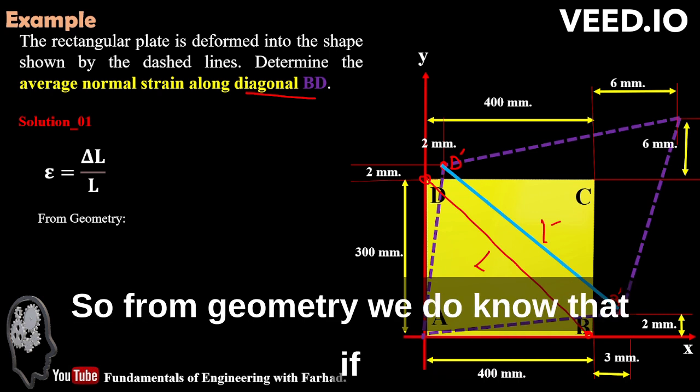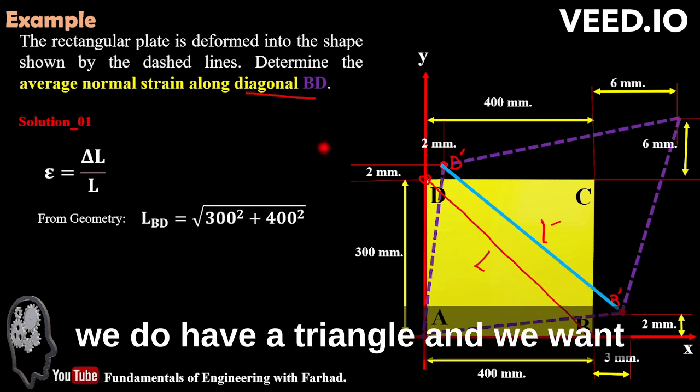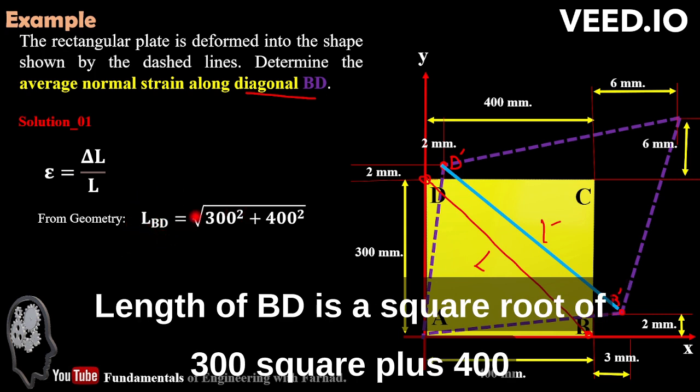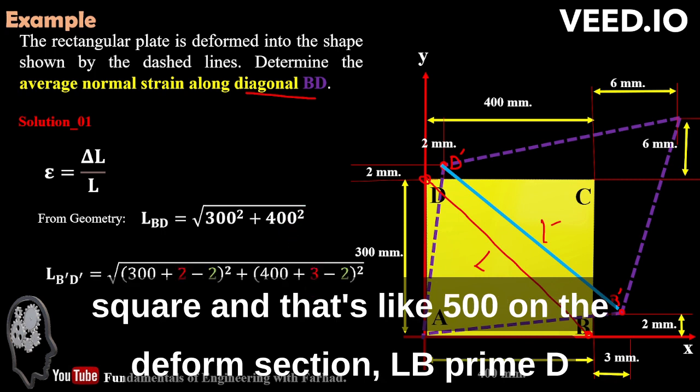From geometry, we know that if we have triangles and we want to calculate the hypotenuse, that's our problem. Length of BD is square root of 300 squared plus 400 squared, and that's 500 millimeters.